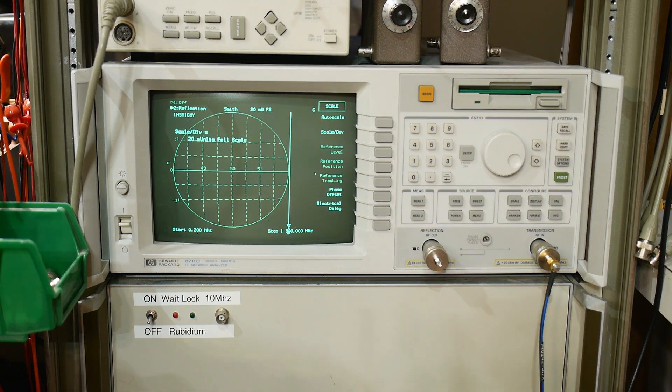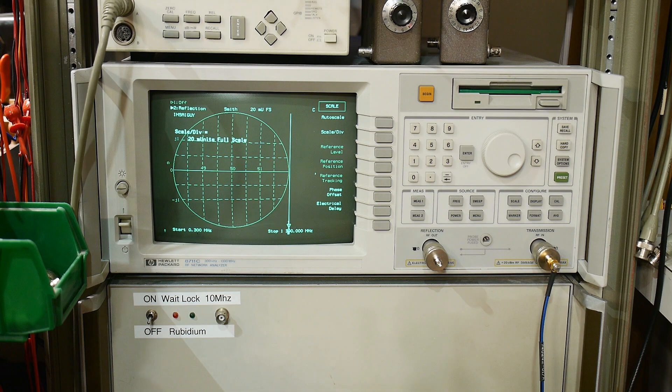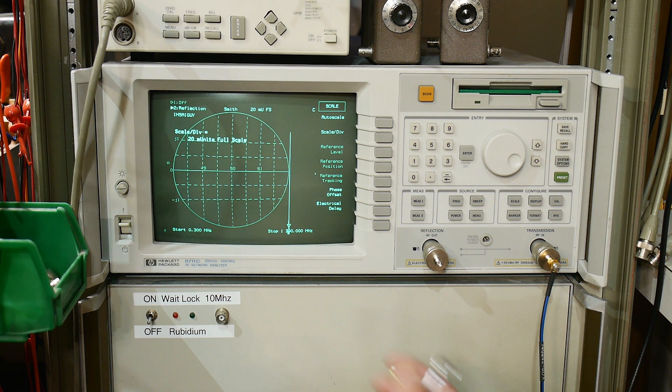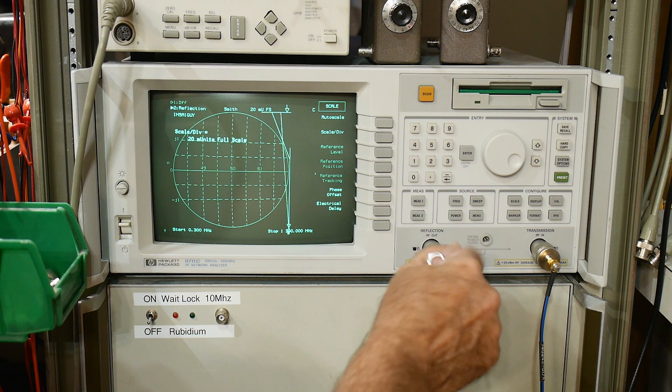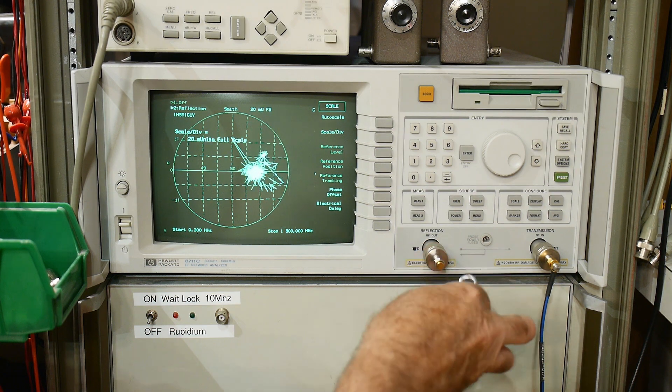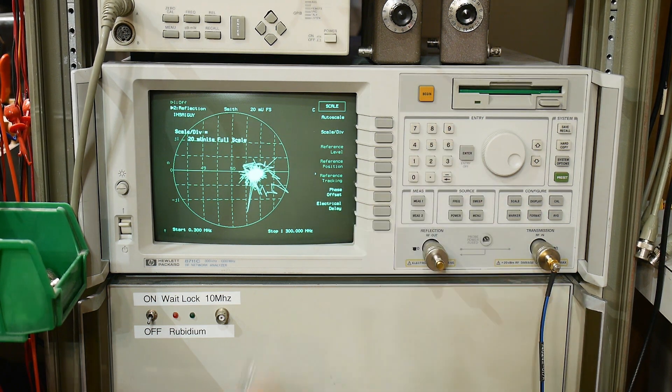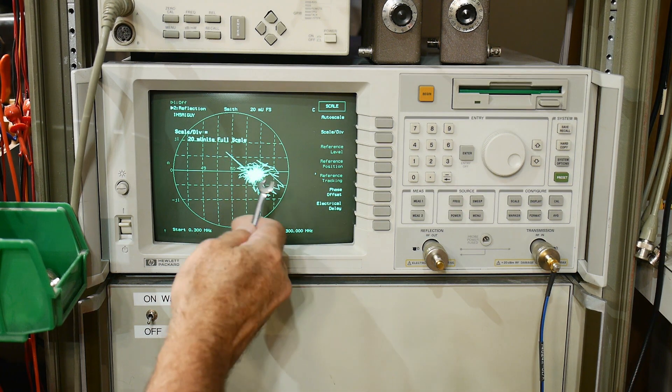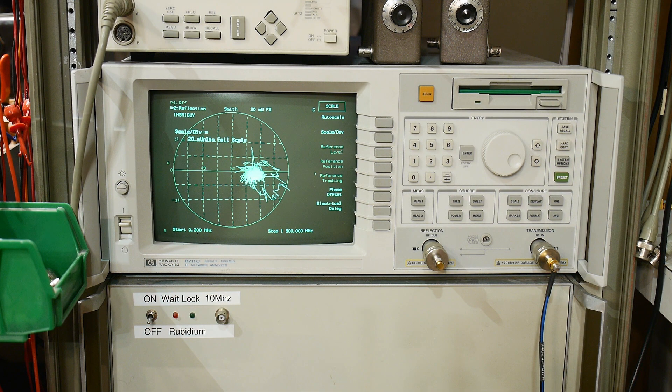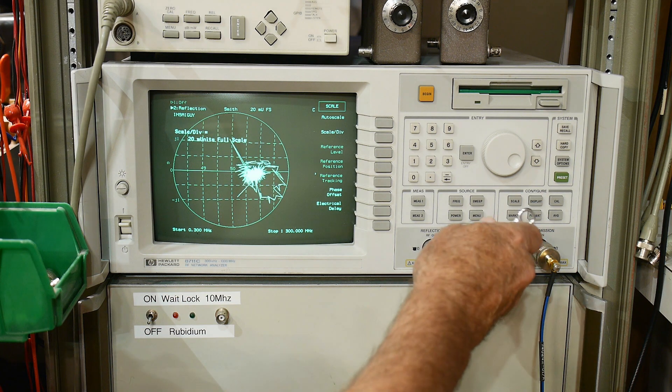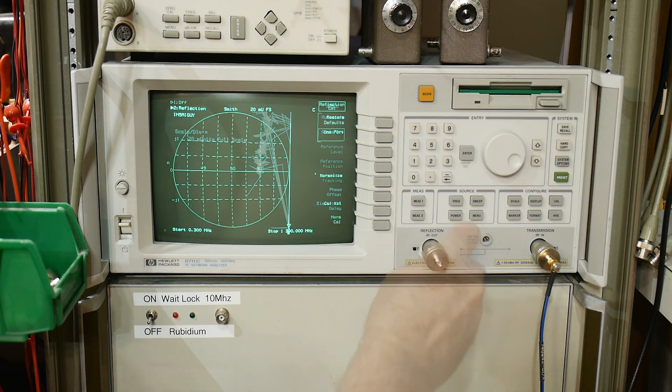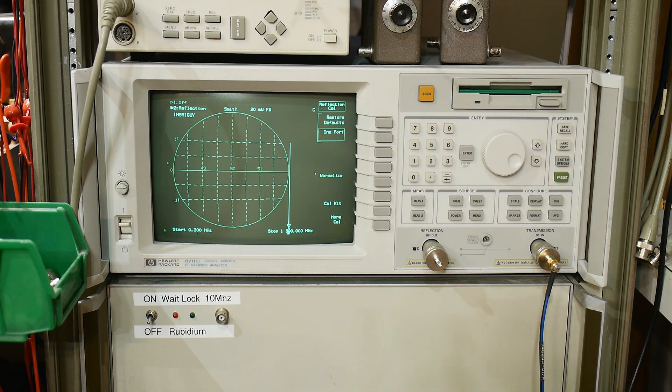All right. So let's take a look at the only nano VNA load I have left. The one with the copper top or brass top. Let's see how it does. And it's sort of over here around 51 ohms. So, you know, not so bad.